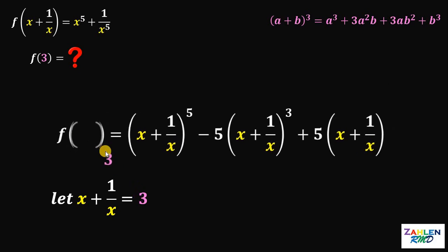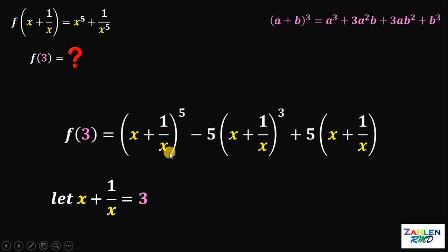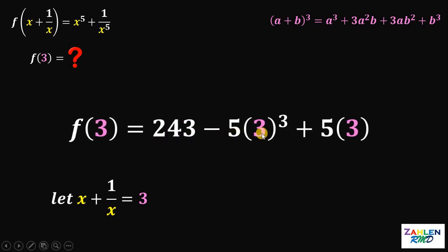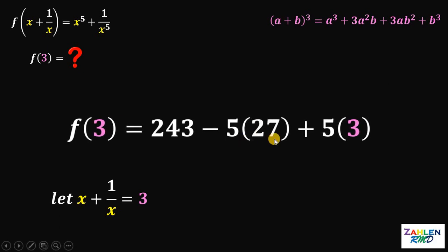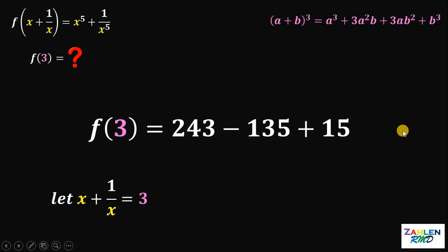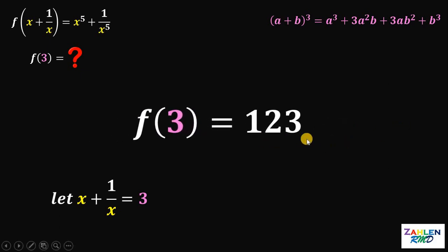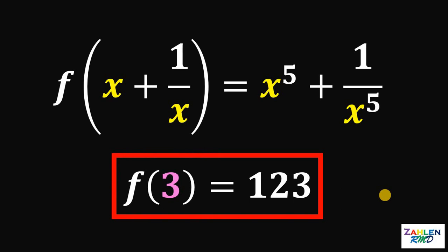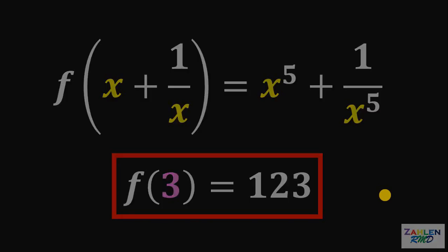Setting x + 1/x = 3, every instance of (x + 1/x) becomes 3. So f of 3 equals 3^5 minus 5 times 3^3 plus 5 times 3. Simplifying: 3^5 is 243, 5 times 27 is 135, and 5 times 3 is 15. Therefore, 243 minus 135 plus 15 equals 123. The value of f of 3 is 123, and we are done.